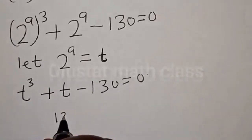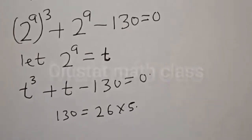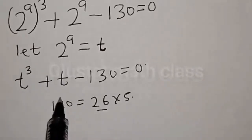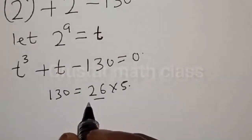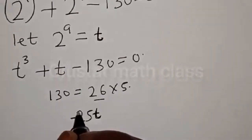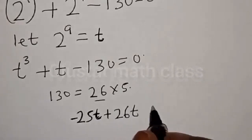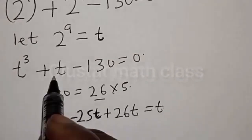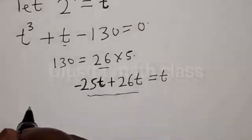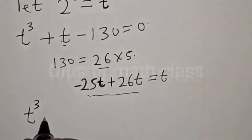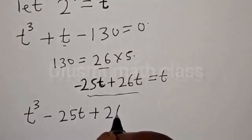Let 2 raised to power a equal to t. Then we have t cubed plus t minus 130 equal to zero. Now 130 equals 26 times 5. We work on 26, and note the coefficient of t here is 1. We can write 26 as minus 25 plus 26, so we split the t term as minus 25t plus 26t.